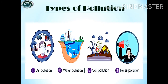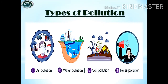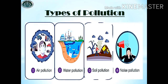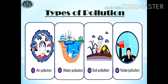The second point is types of pollution — how many types of pollution are there in our environment. We have these types: number one, air pollution; number two, water pollution; number three, soil pollution; and number four, noise pollution.